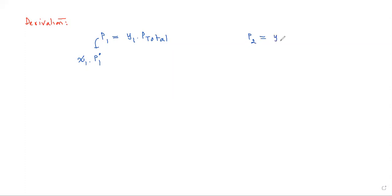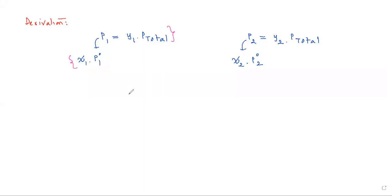Similarly, p2 is equal to y2 into P_total, and p2 can be written as x2 into p°2. We are actually equating two different things — this refers to the liquid phase and this refers to the vapor phase.